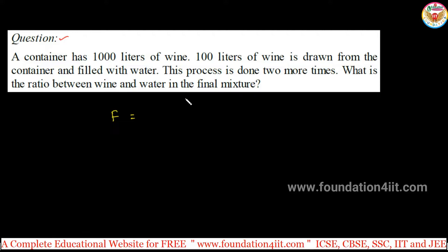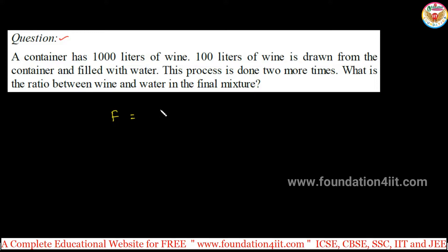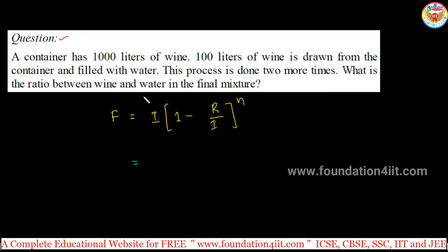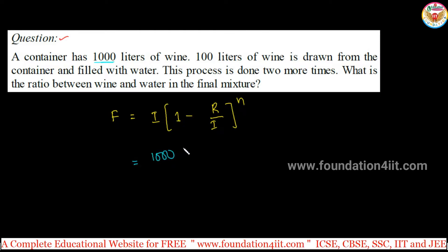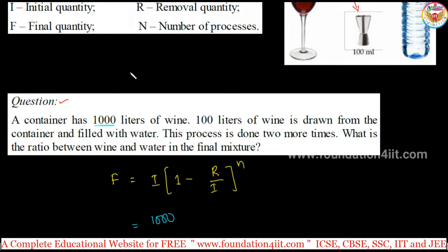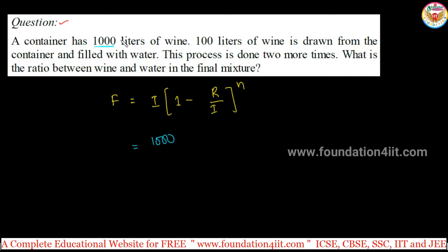If you want the final quantity of wine — how much wine remains in the 1000 liters — then F equals I into (1 minus R by I) whole to the power N. According to this problem, initial quantity is 1000 liters. The container has 1000 ml — 100 ml is drawn every time. Just consider this is 1000 ml and 100 ml is drawn.